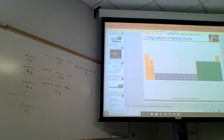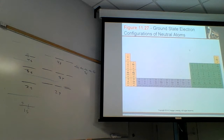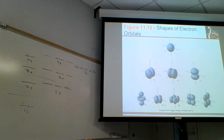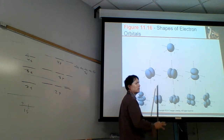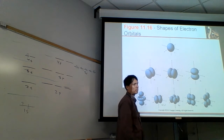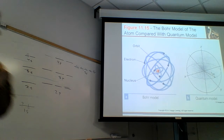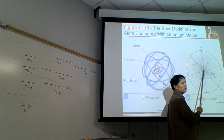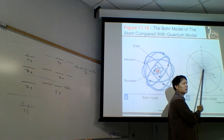If we overlay all five d orbitals one on top of each other, it gives spherical symmetry. Same for all p orbitals overlaid. A filled shell will be spherically symmetric like this. The nucleus is right here in the center, and each dot represents the probability of finding electrons — like a bird map.